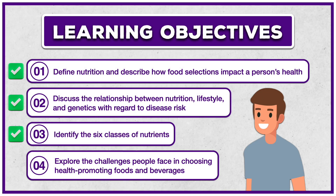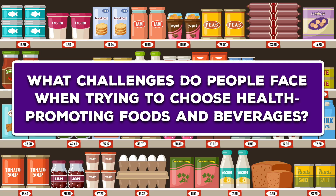That takes care of the third learning objective — identify the six classes of nutrients — leaving us with just one more. Now we'll explore the challenges people face in choosing health-promoting foods and beverages. I want you to spend some time answering the following question: What challenges do people face when trying to choose health-promoting foods and beverages? Go ahead and pause the video and write down a few.